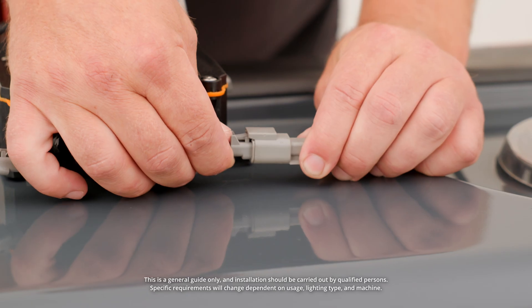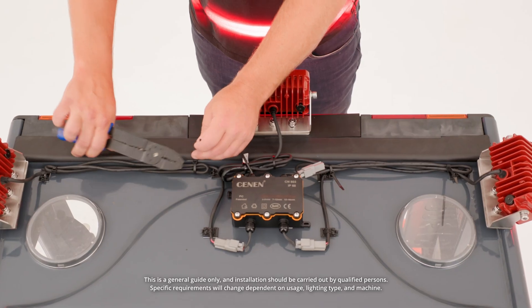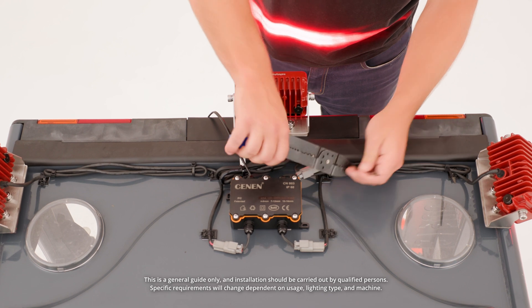Connect the installed lights to the junction box using the connectors as demonstrated. Ensure all cables are secured and free from potential damage.